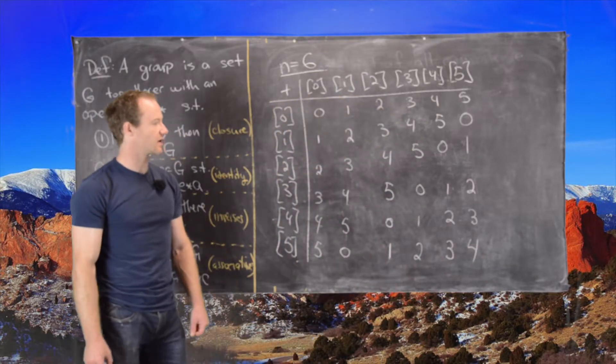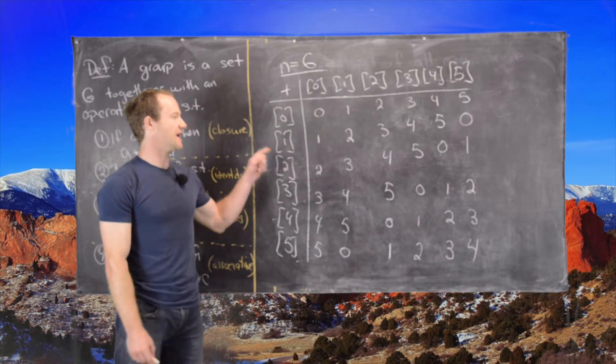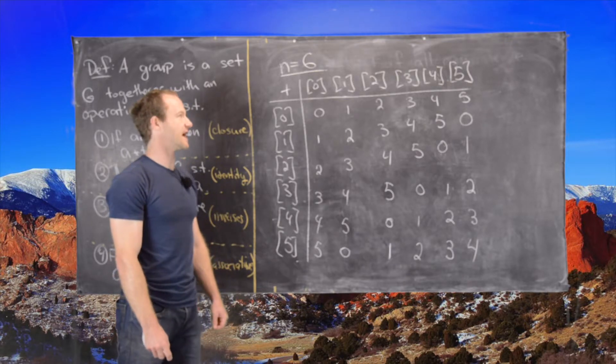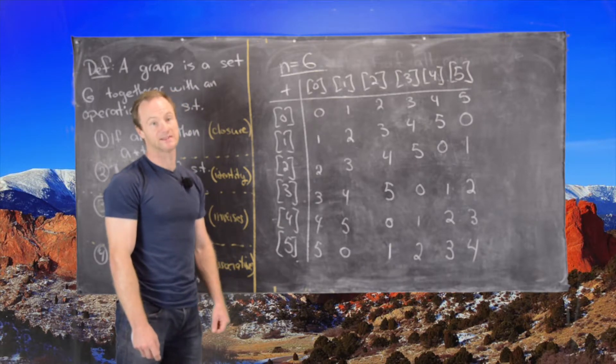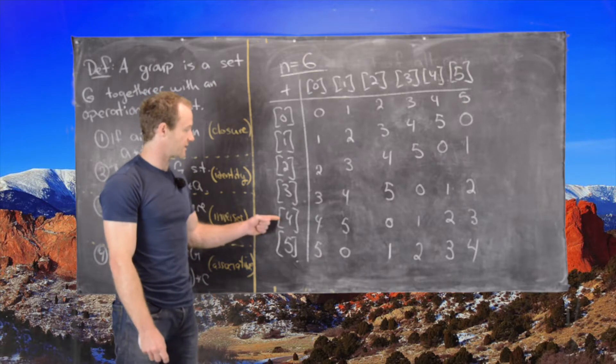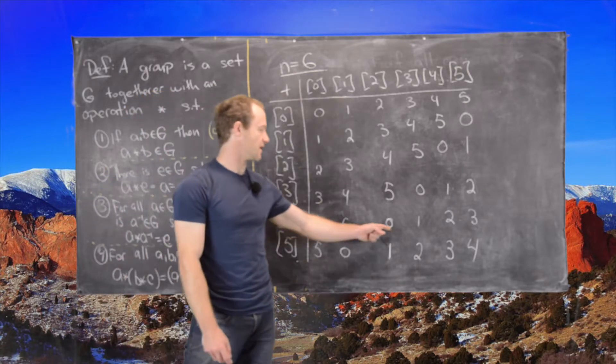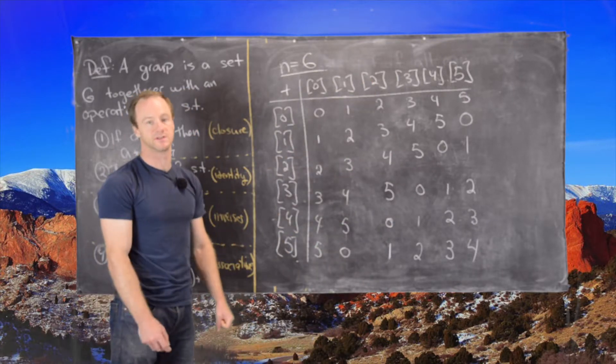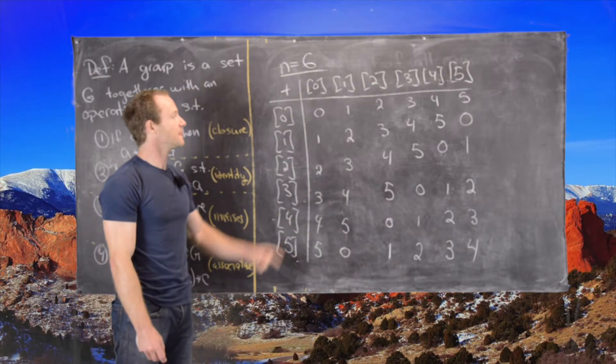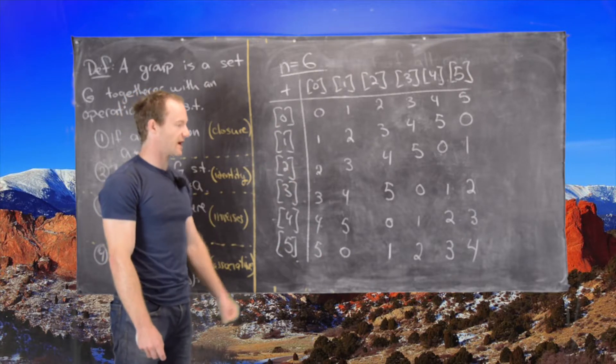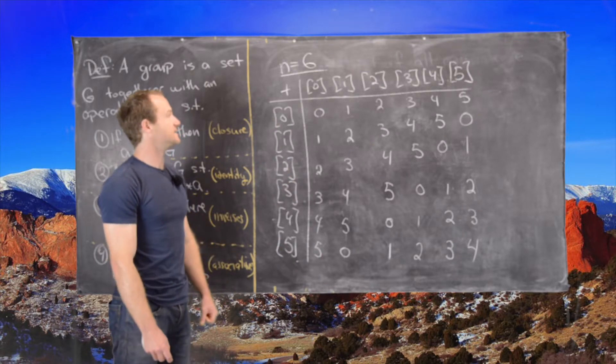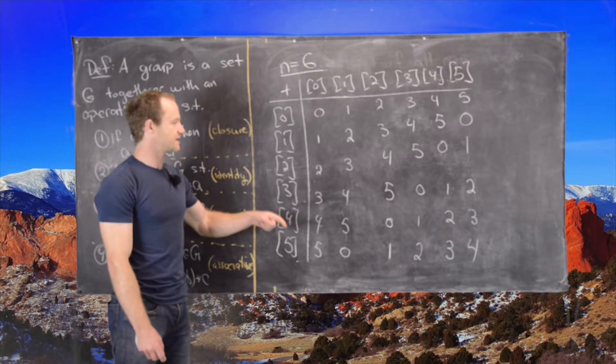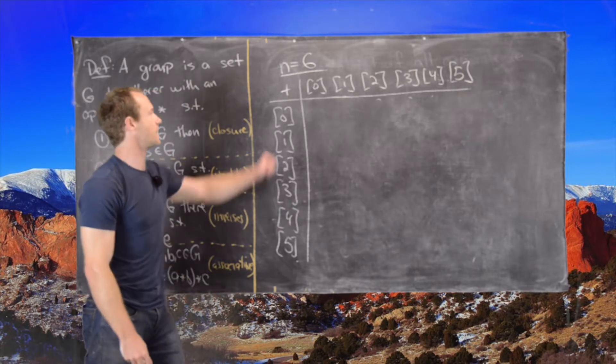So now if we look in here, we see that there is a 0 in every row and every column, which tells us that every element here has an inverse. So for example, if we go here to 4, we go over to the 0 entry, we go up and we see that the inverse of 4 is 2. Okay. So this provides some evidence that Z_6 with this addition is a group. So now let's look at the multiplication and see if anything goes wrong.